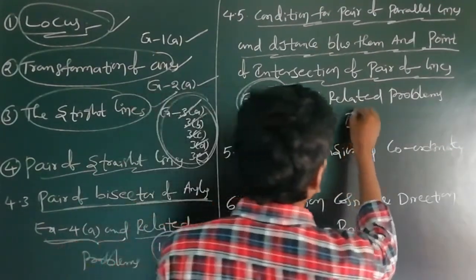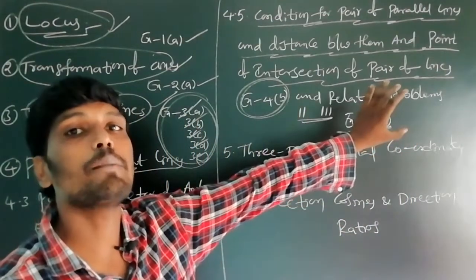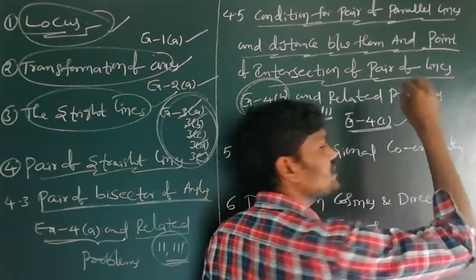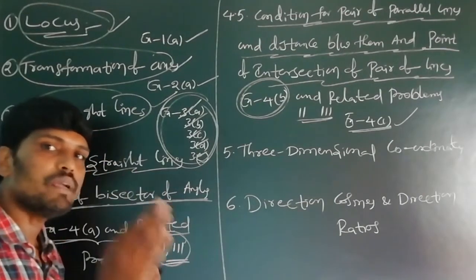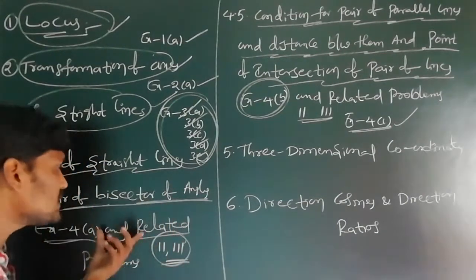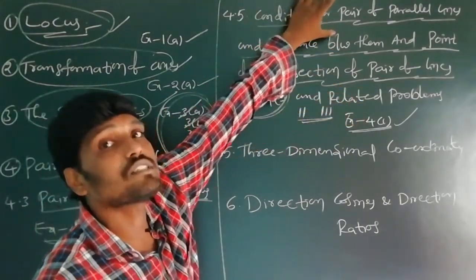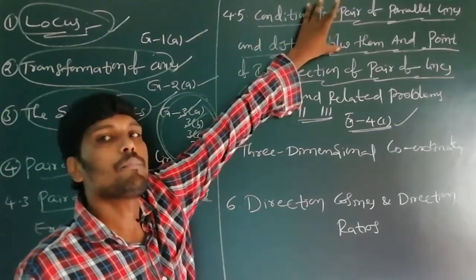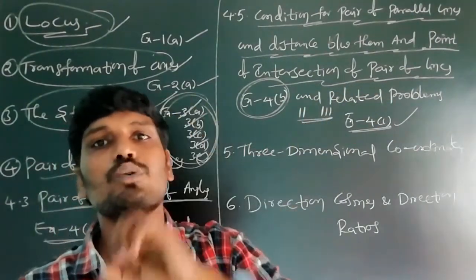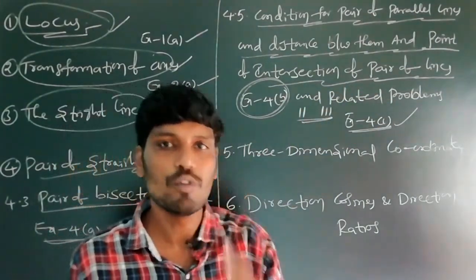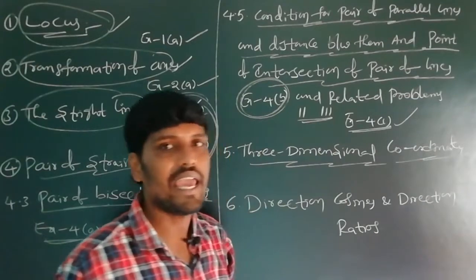There is one more exercise in Chapter 4 — Exercise 4c, which covers Homogeneous equations. This topic has not been deleted and is coming to the IP examination. To summarize Chapter 4: Exercise 4a sections 2 and 3 are deleted, Exercise 4b sections 2 and 3 are deleted, and Exercise 4c is fully retained.